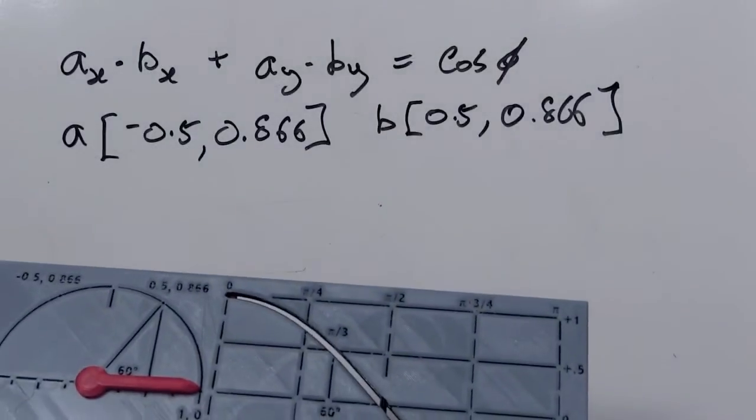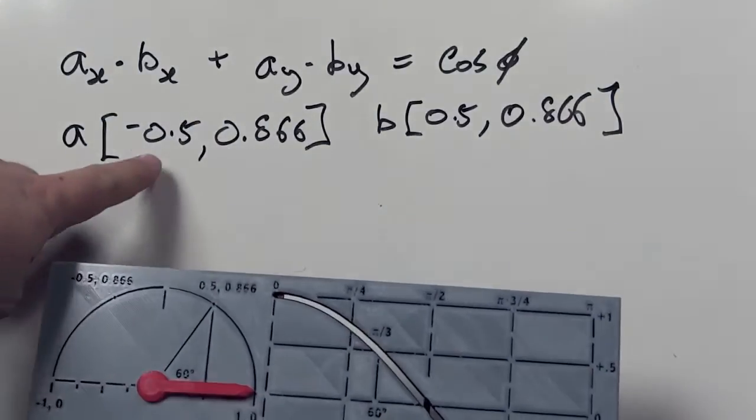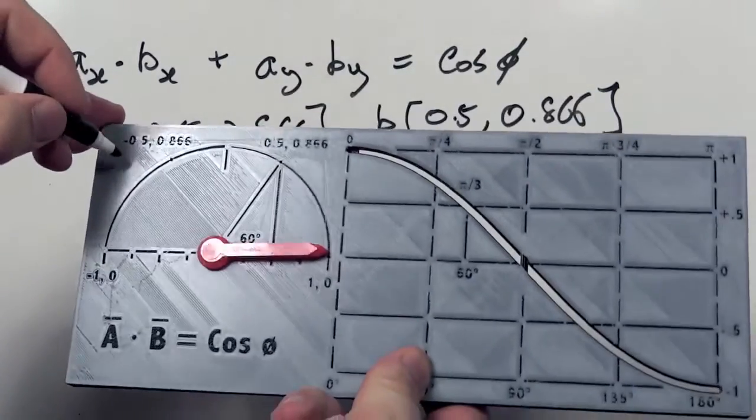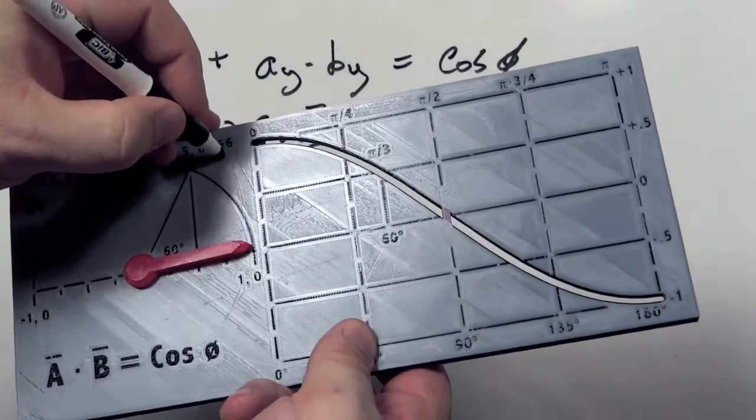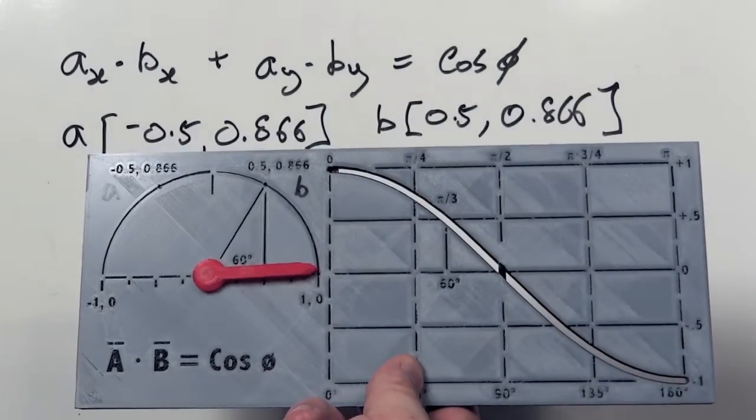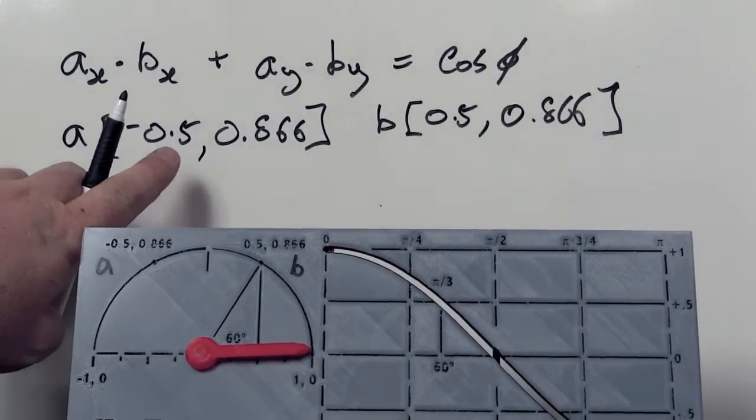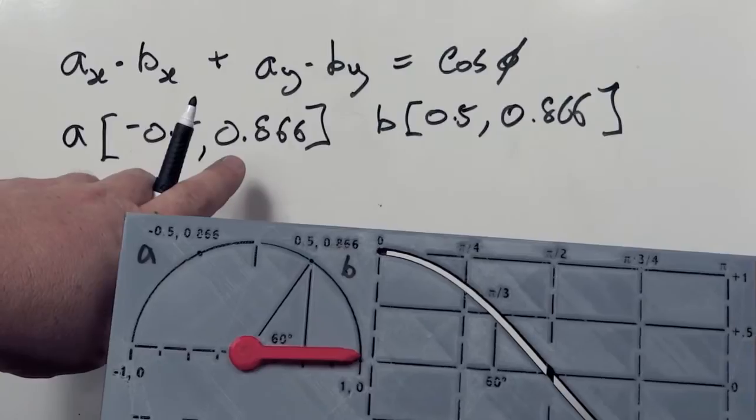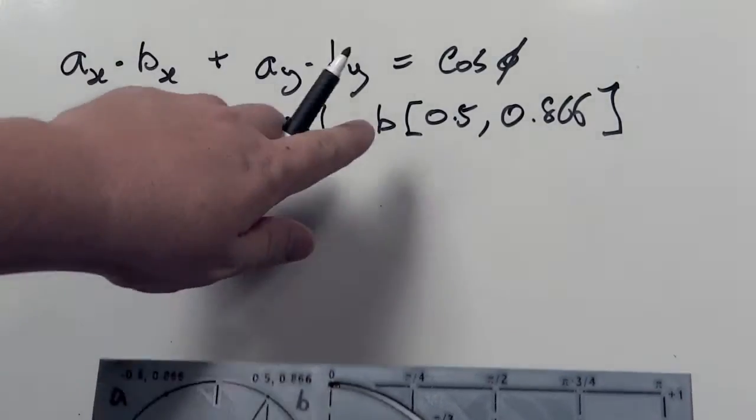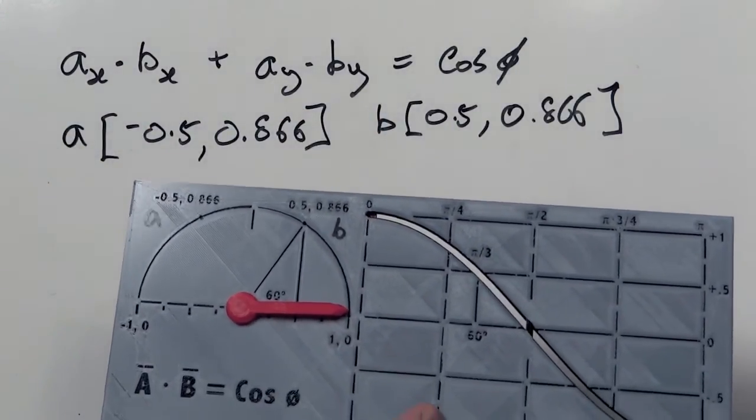Let's put some numbers into that formula. In this example, we've got two points. This will be our A point, and this will be our B point. So A is [-0.5, 0.866] and B is [0.5, 0.866] for the X and Y values.